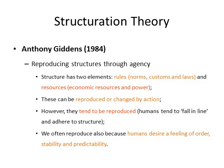Reproducing structures through agency: structures have two elements — rules such as norms, customs, and laws, and resources such as economic resources and power. These can be reproduced or changed by action, but they tend to be reproduced. Humans tend to adhere to structure and do as they're told — once we've learnt the rules and norms, we tend to comply. We often reproduce structure also because humans desire a feeling of order, stability, and predictability. We don't rock the boat or try to maintain the status quo because structure is comforting — it means you know where you are and what your role is within society.